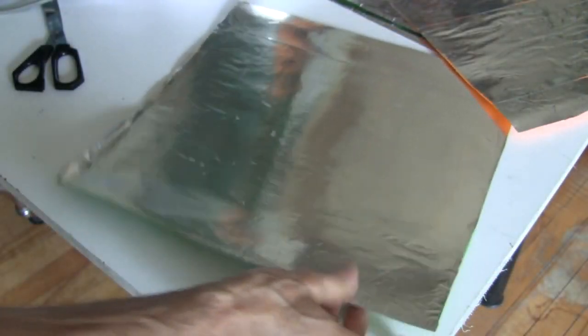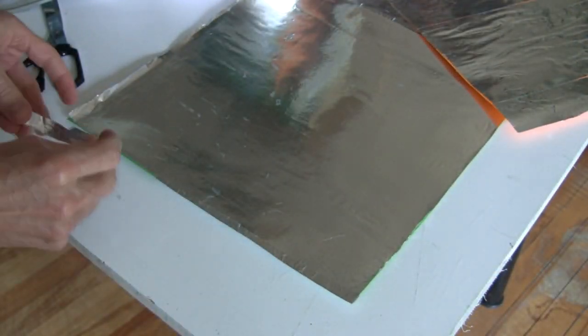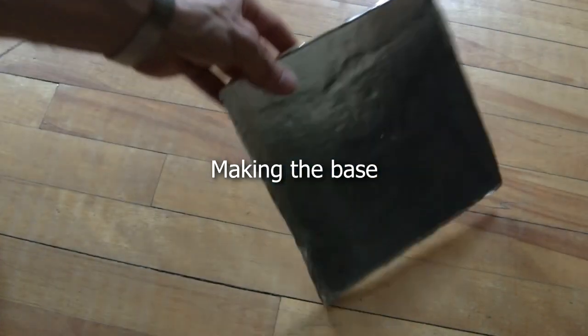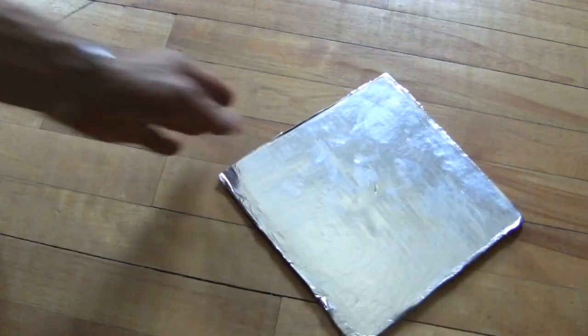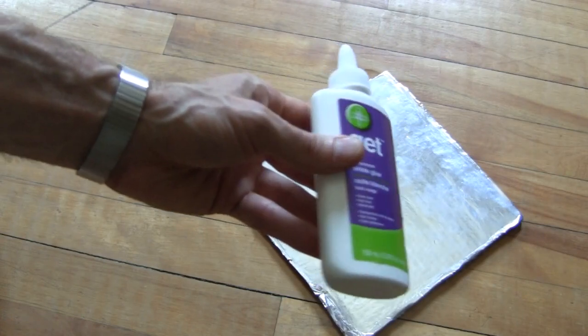So now I'm just taping up the edges to protect them. So here's the 8 inch base made out of that cardboard box. I've glued aluminum foil to one side of it. The glue I used is just this school glue.